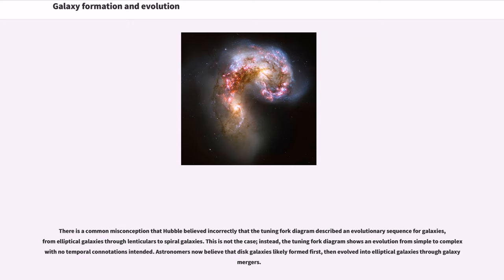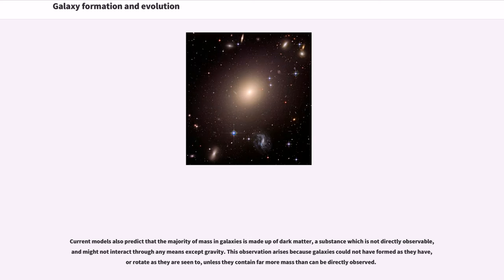Astronomers now believe that disk galaxies likely formed first, then evolved into elliptical galaxies through galaxy mergers. Current models also predict that the majority of mass in galaxies is made up of dark matter, a substance which is not directly observable and might not interact through any means except gravity. This observation arises because galaxies could not have formed as they have, or rotate as they are seen to, unless they contain far more mass than can be directly observed.